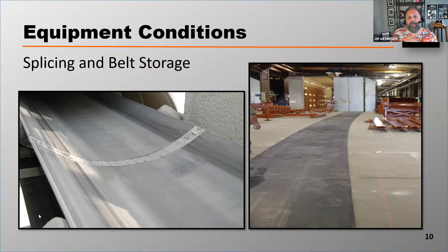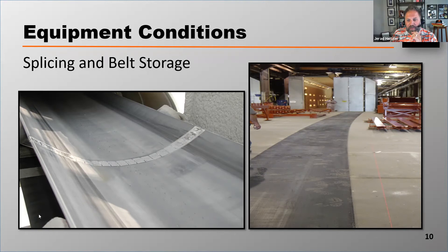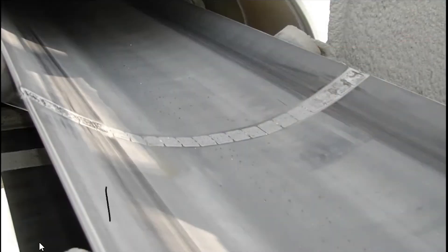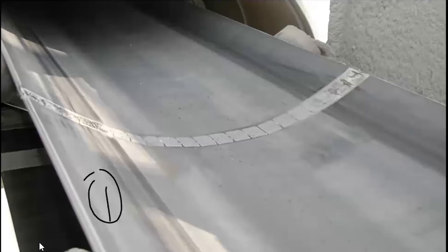One of the most overlooked reasons why a belt mistracks is because of improper splicing and improper belt storage. The photo on the left, photo one, is an example of what we call a pretty square splice.